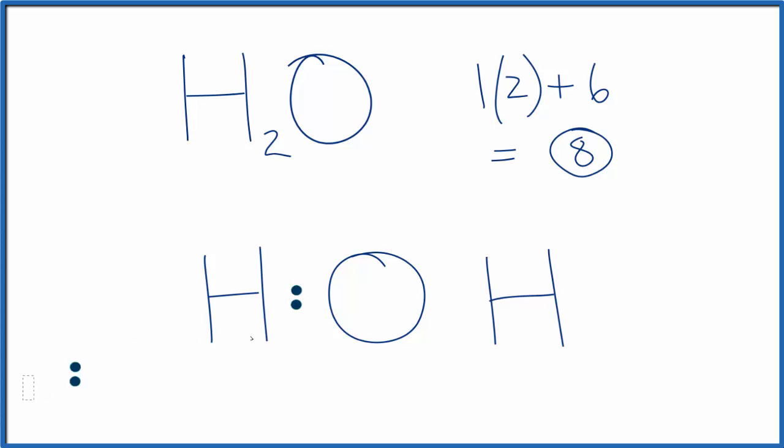We have eight total valence electrons for this Lewis structure for water. We'll put two between the atoms. This forms the chemical bond. This is a covalent bond. These are shared. These pairs of electrons are shared. We've used four. We have a total of eight.